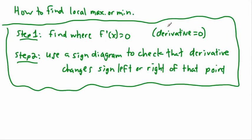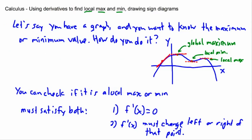In the last video, we were looking at how to find a local maximum or minimum on a graph. If I go back here, we can see in this graph right here, this is a local maximum, there's a local minimum, and a local maximum.